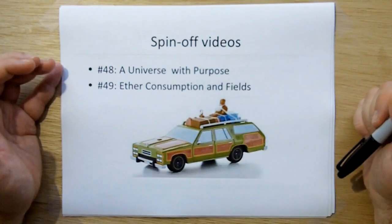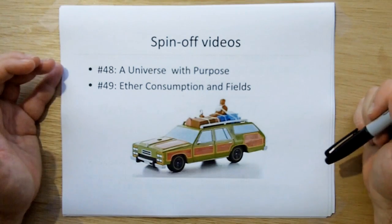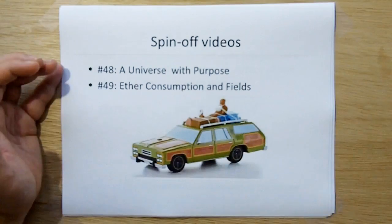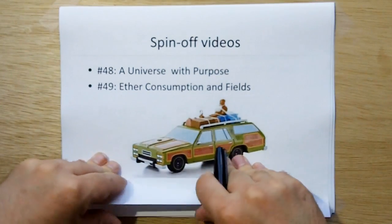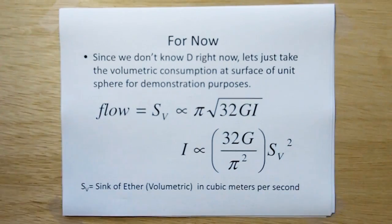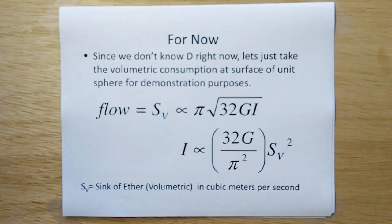And we're going to use the car from family vacation as another prop. Later at video 49, we're going to go back into ether consumption and how it relates to fields. That was going to be part of this video, but it got too long.